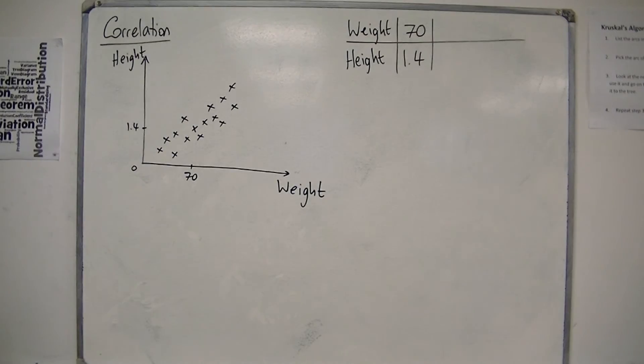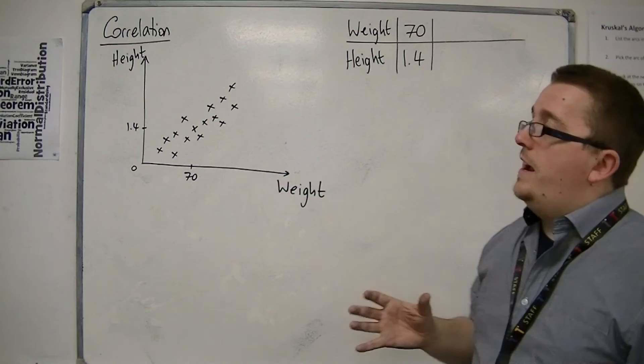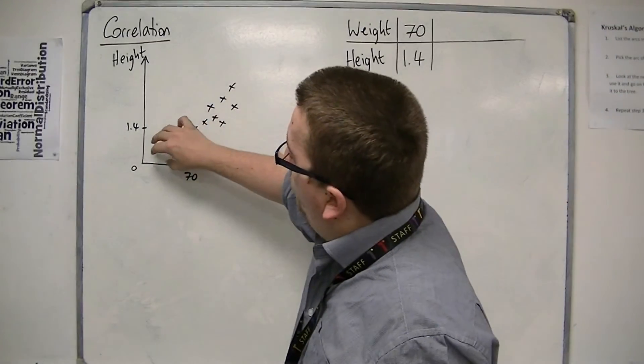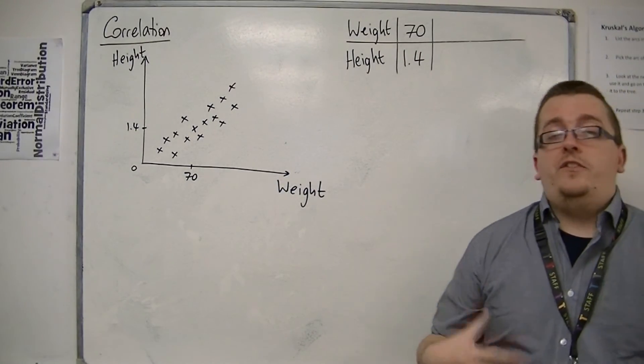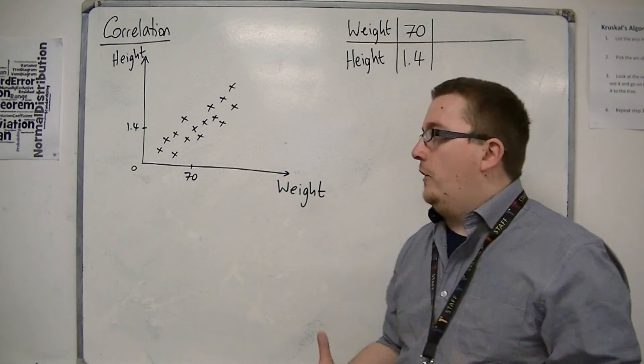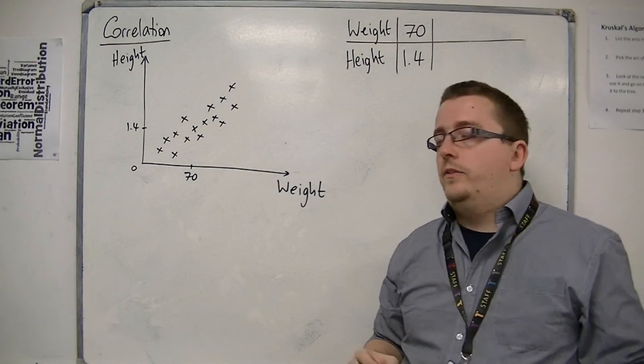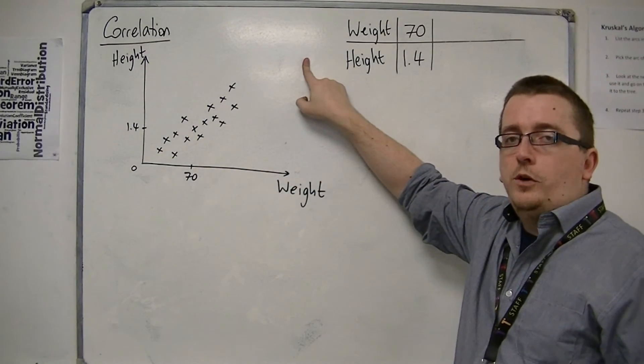And so what you might find is that there is seemingly a connection between weight and height. That as one increases, the other appears to be increasing. Now this isn't always going to be true. That's why it's not in a nice, neat, straight line. And there's dots all over the place, around that line going up from the bottom left to the top right.